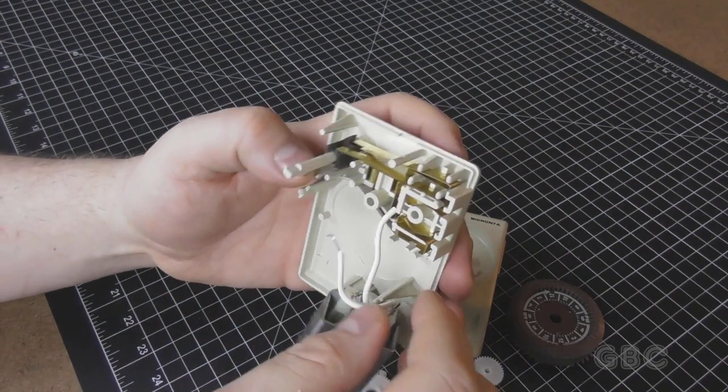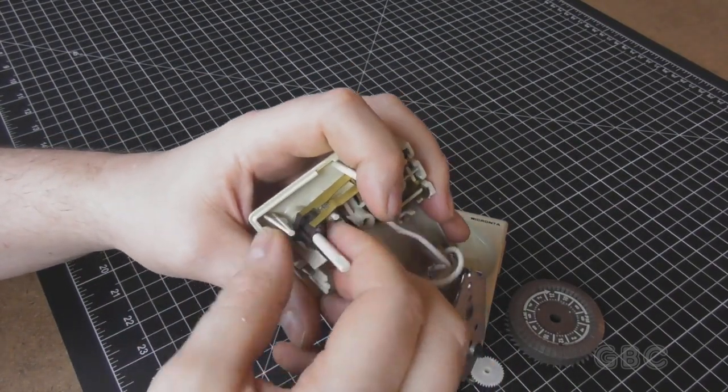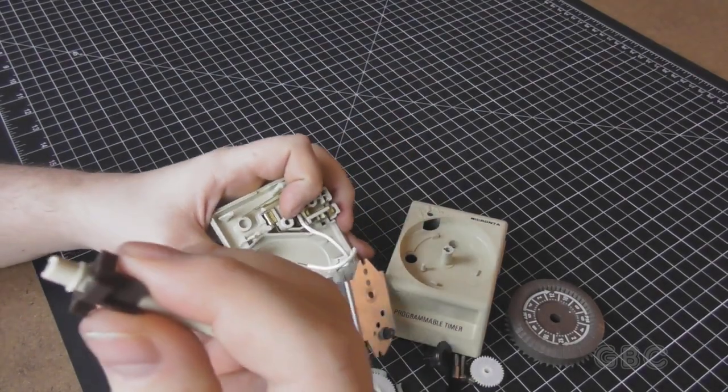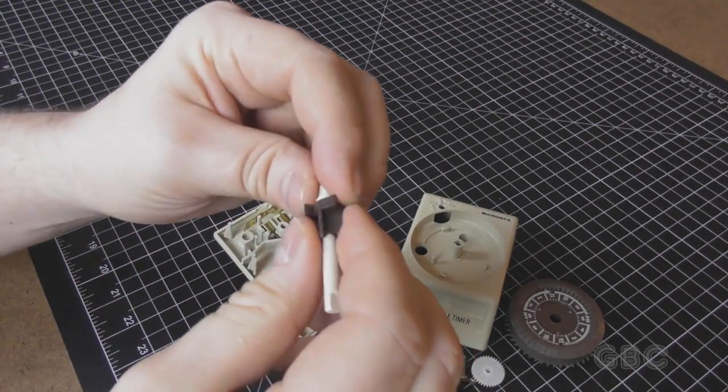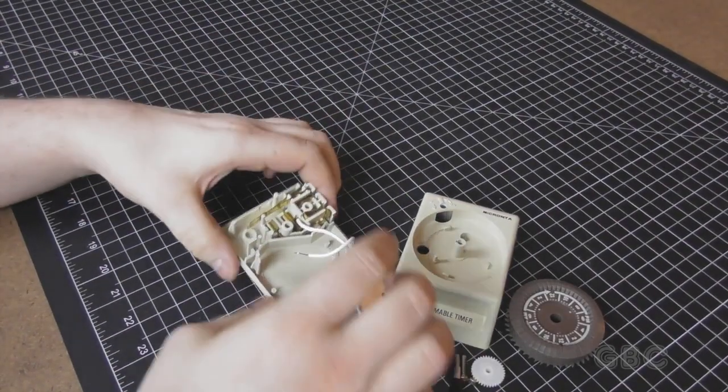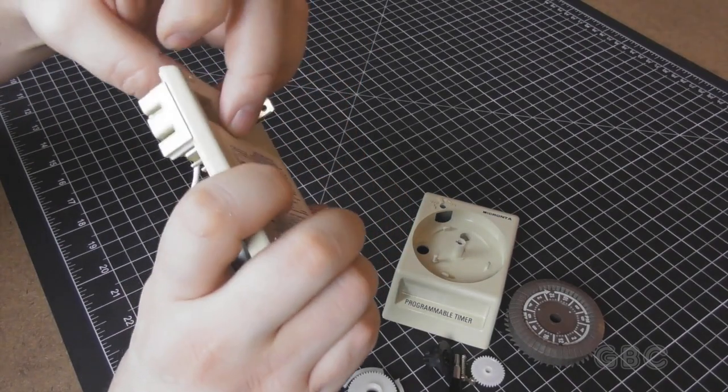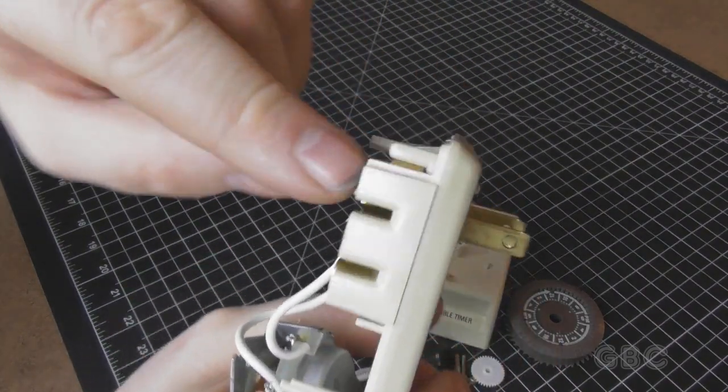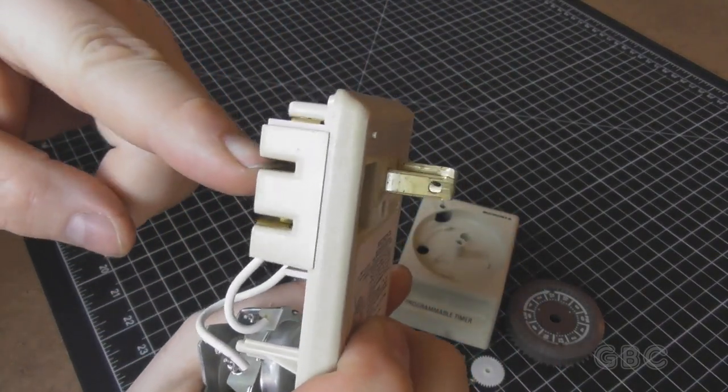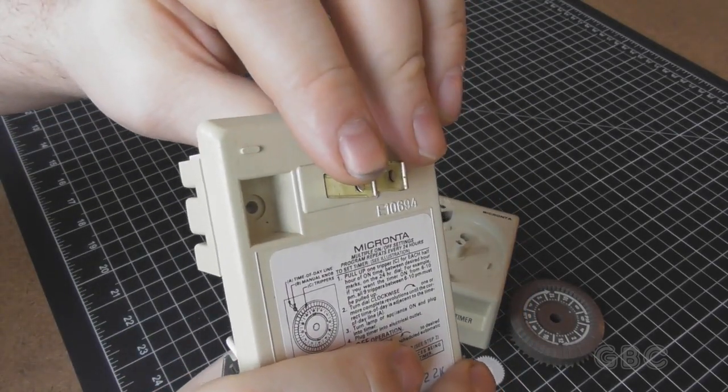Back to the switch. This is the part of the shaft that is actually switching it on and off. And that doesn't come apart any further. So the one that is switched is this one, which is the hot or line. And that comes from this prong.